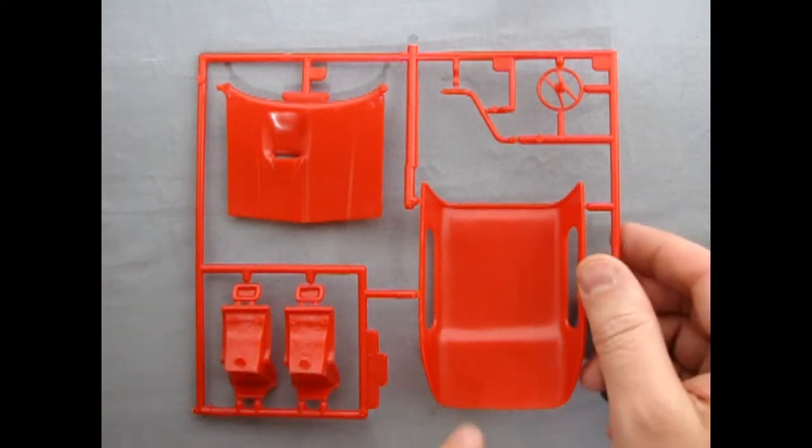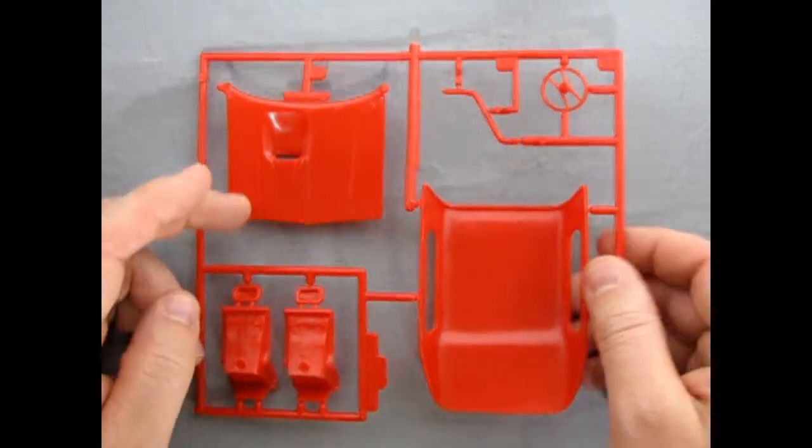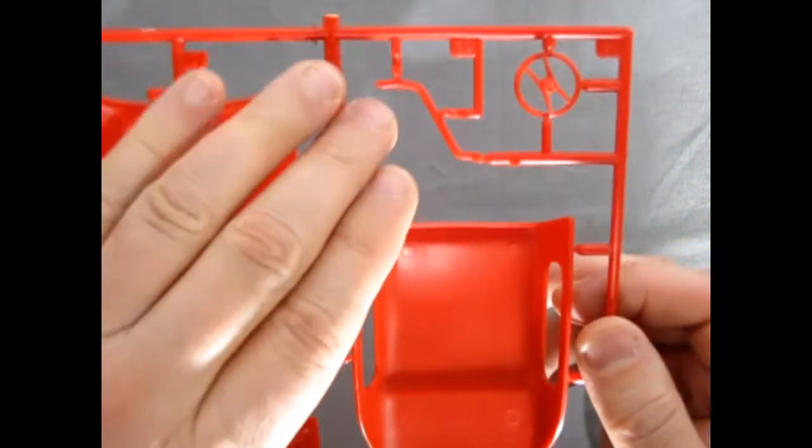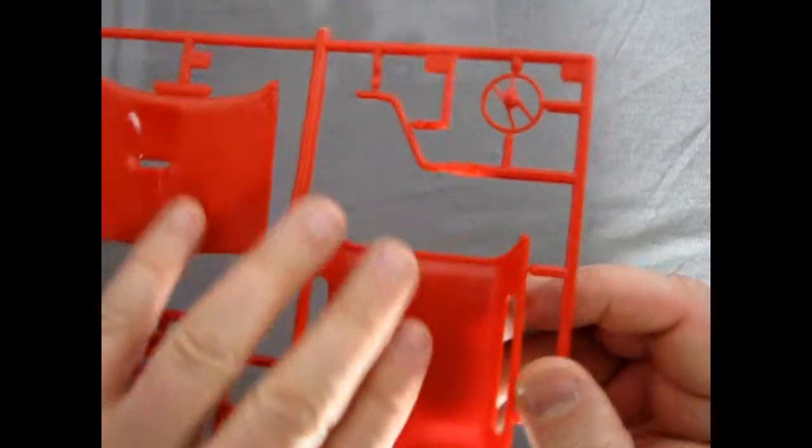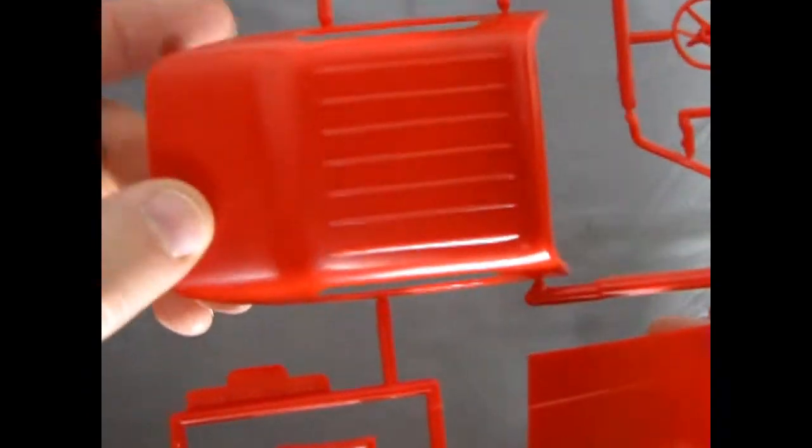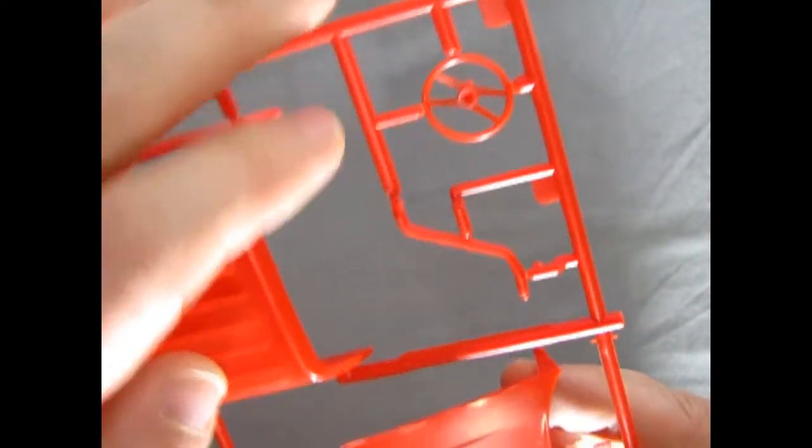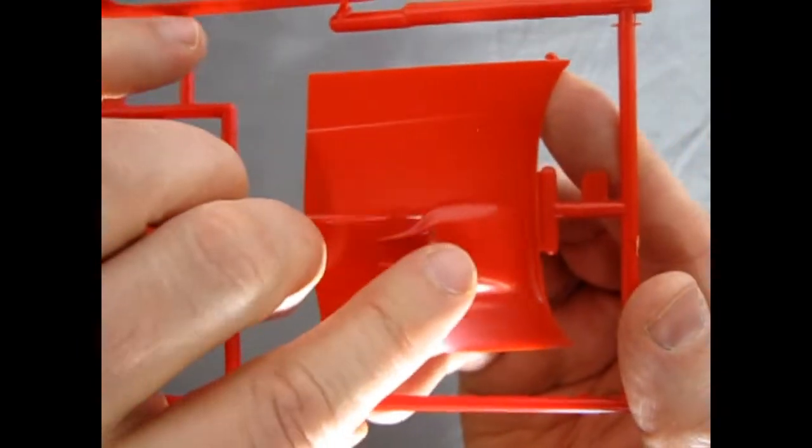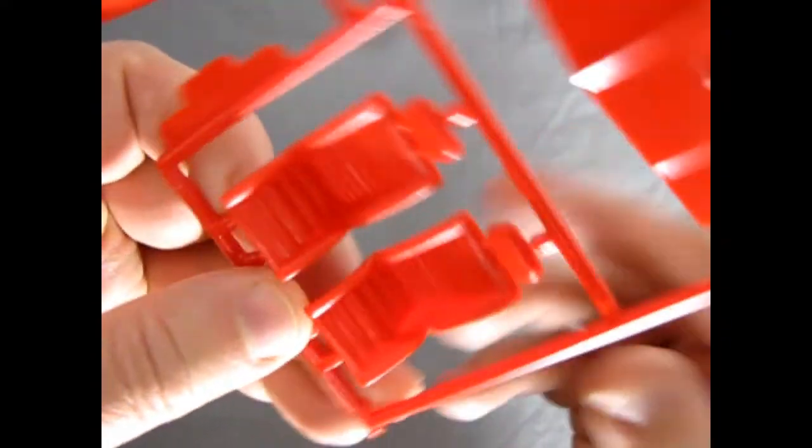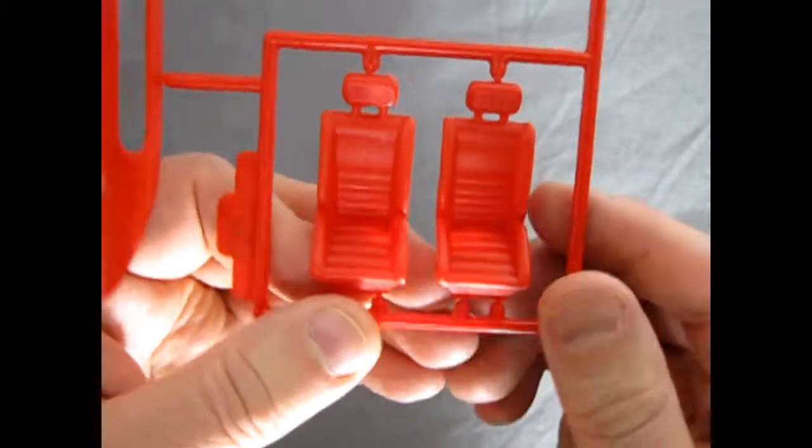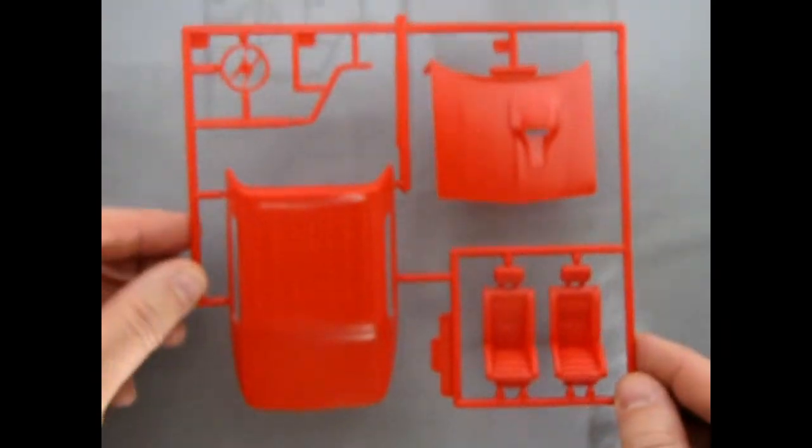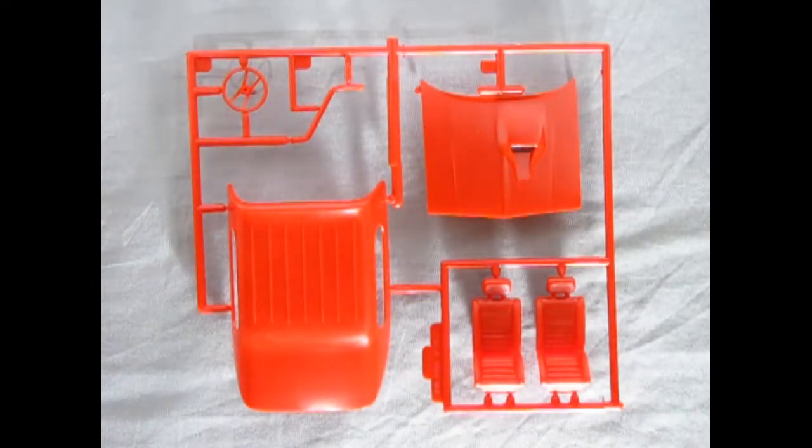Our last red parts tree includes the camper top, the hood, and our bucket seats, as well as the exhaust pipe and our steering wheel. And if we turn it over, you can see the wonderful ribs on top of the roof as well as our Camaro style steering wheel. There's our hood with that offset hood scoop for the turbocharger and look at the wonderful upholstery on the seats. This is again top-notch model material from Monogram.